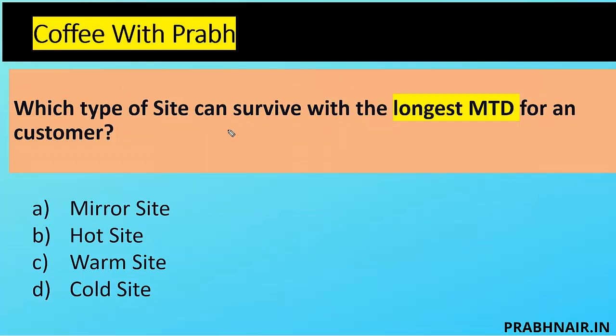Question 3: Which type of site can survive with the longest MTD for a customer? Longest MTD means more time to restore — for example, MTD 10 hours versus 5 hours. Mirror site doesn't demand the longest MTD, so A is removed. Hot site just needs data moved, so restoration takes about 24 hours. Warm site needs servers moved then data, which takes longer. But the longest time belongs to cold site because everything has to be built there. Answer is D — cold site.